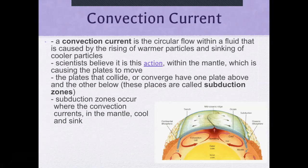A convection current is a circular flow within a fluid caused by the rising of warming particles and the sinking of cooler particles. Scientists believe it is this action within the mantle which is causing the plates to move. The plates that collide or converge have one plate above the other — these places are called subduction zones.